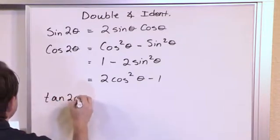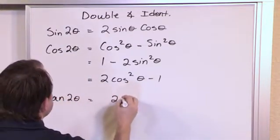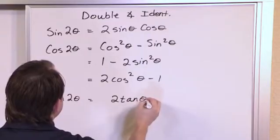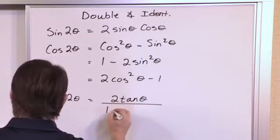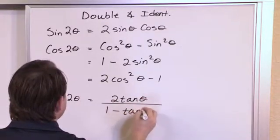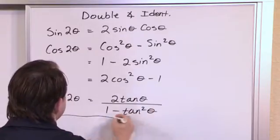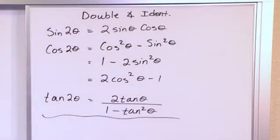Tangent of 2 theta is 2 times the tangent of theta over 1 minus the tangent squared of theta. And those are the double angle identities.